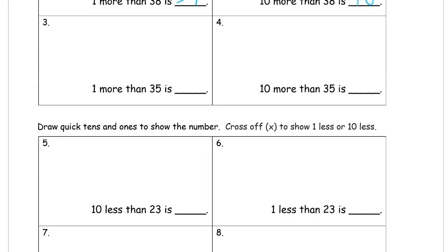One more than 35. So that's ten, twenty, thirty, thirty-one, thirty-two, thirty-three, thirty-four, thirty-five — or three tens, five ones, right? And one more. So what's one more than 35? It's 36.